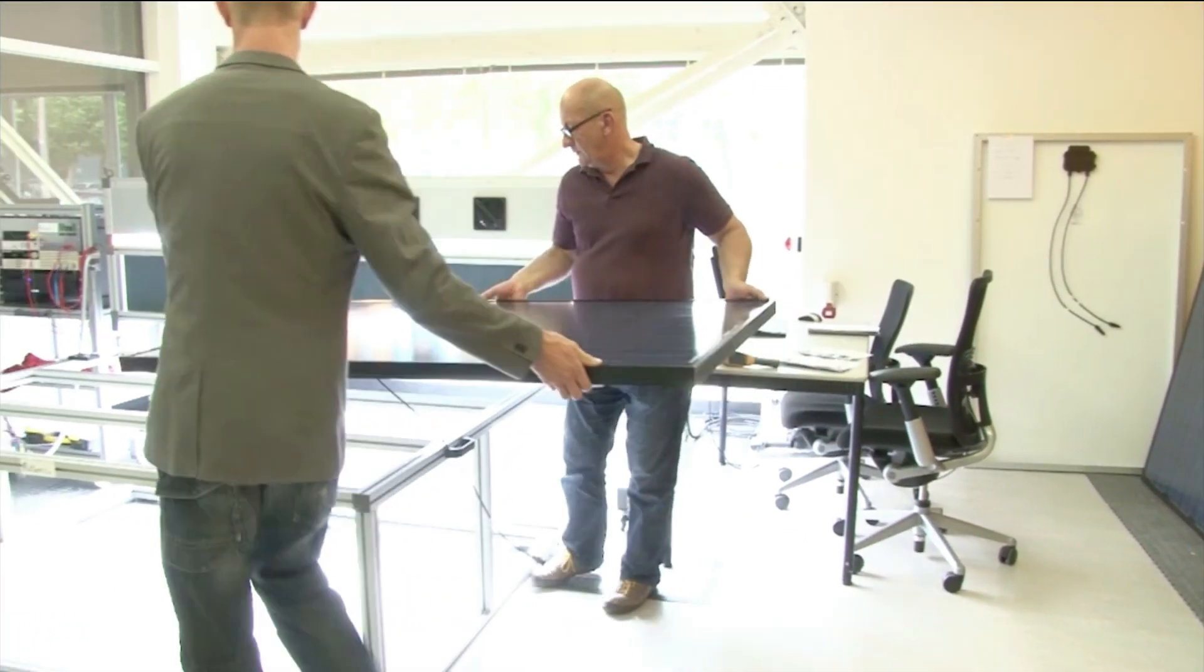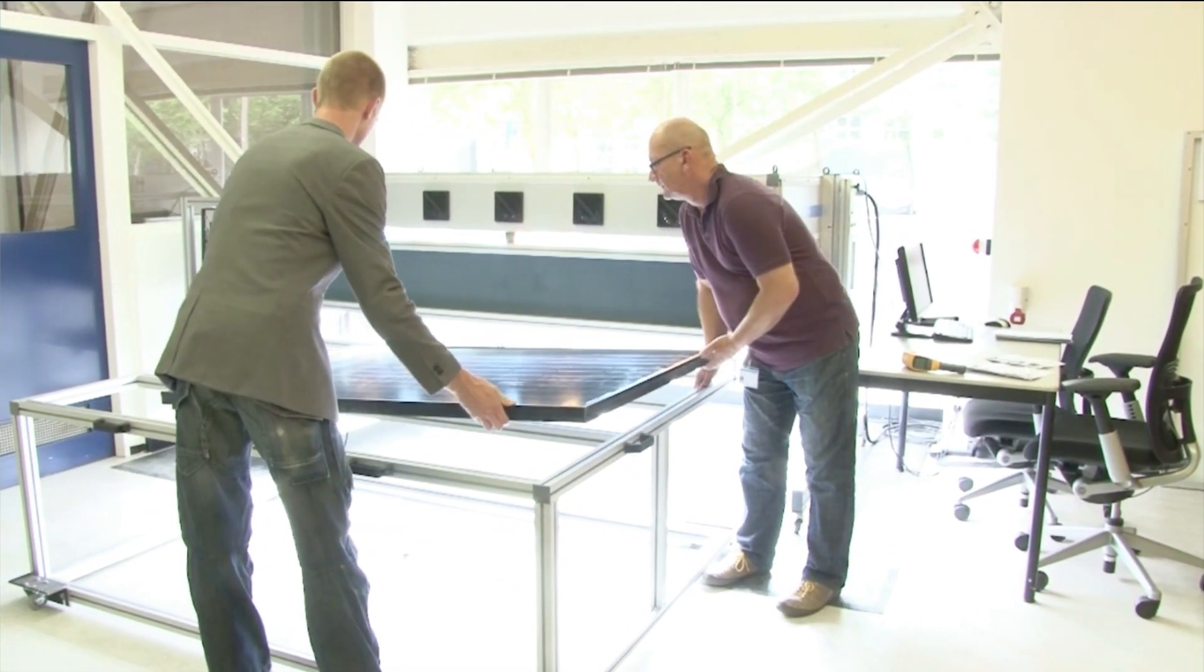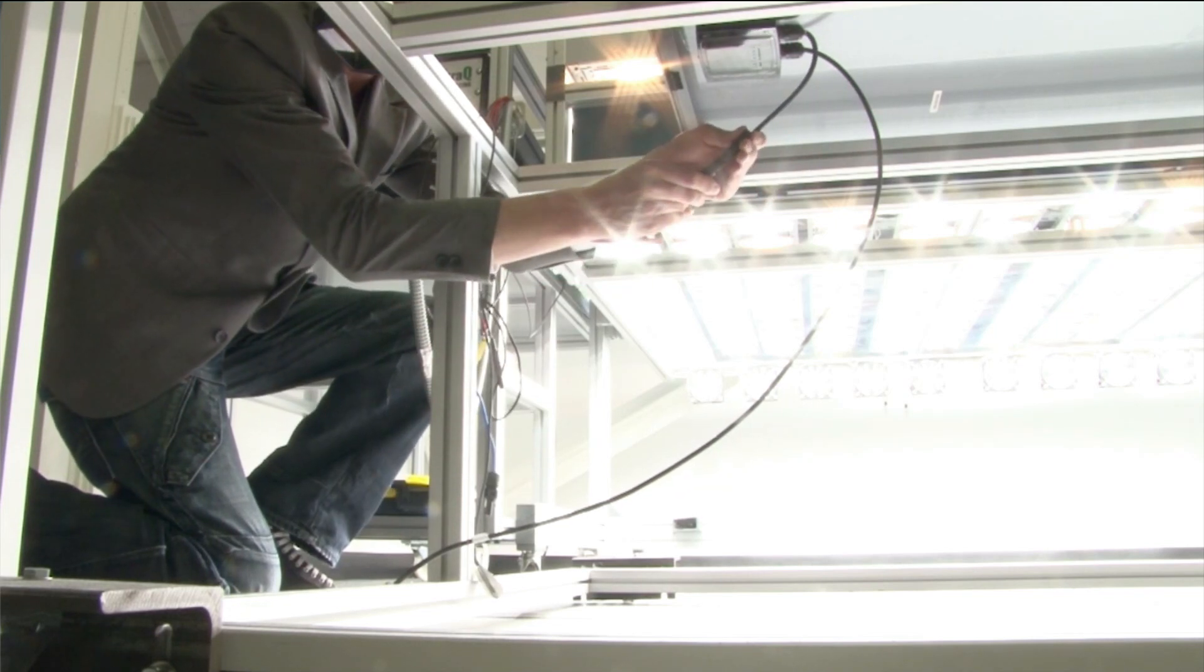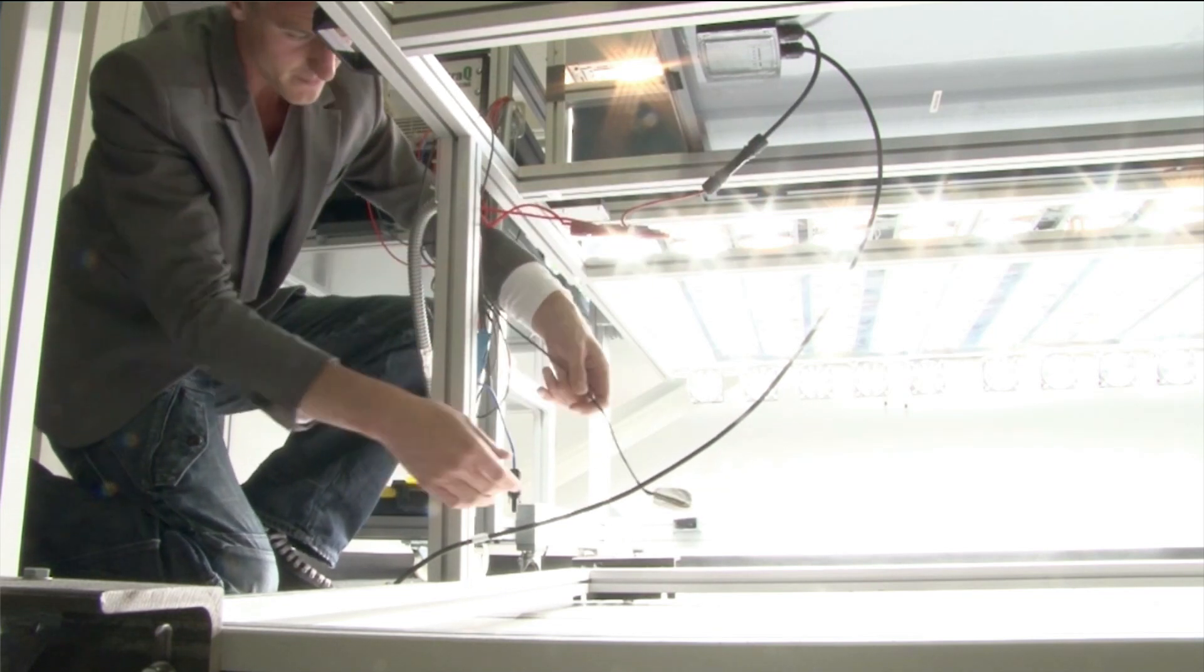In the Solar Lab we use a large AAA solar simulator from Eternal Sun. AAA indicates that the spectral match, the uniformity and the stability is of A-class quality.